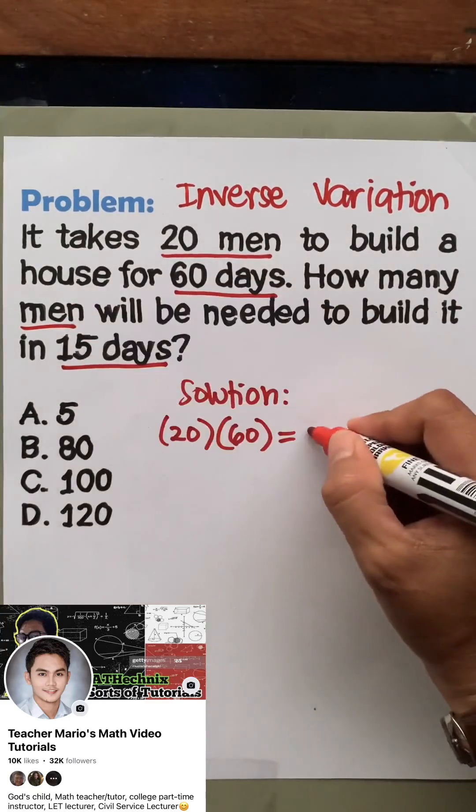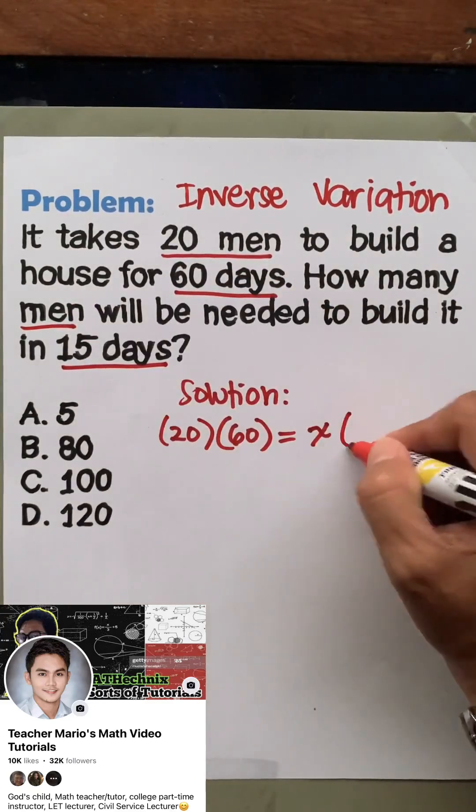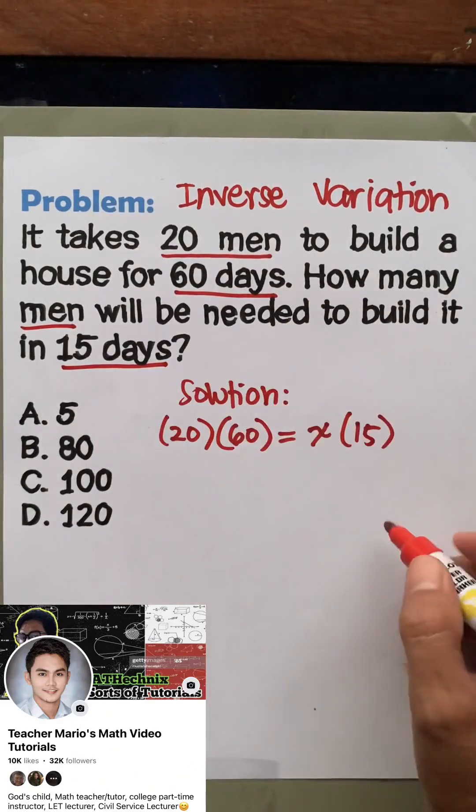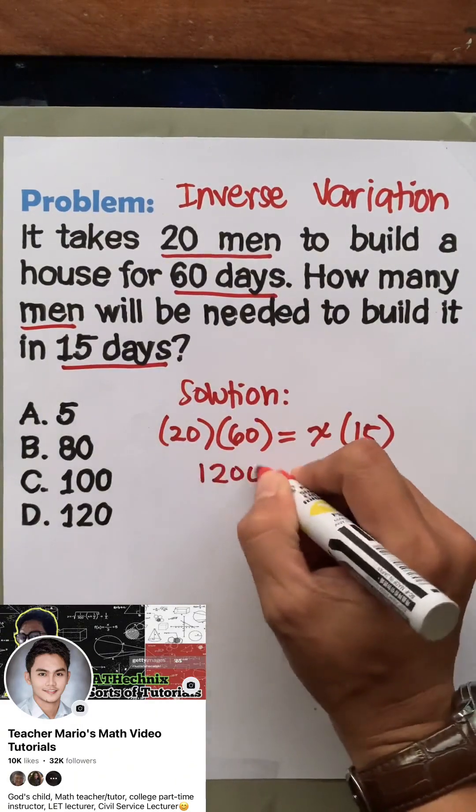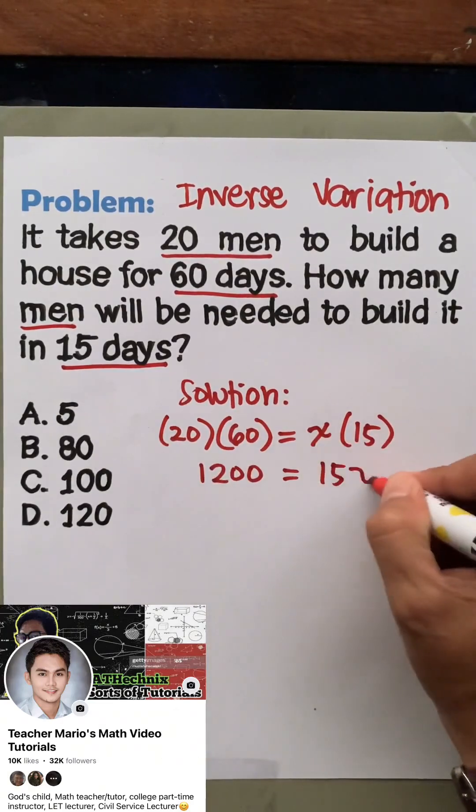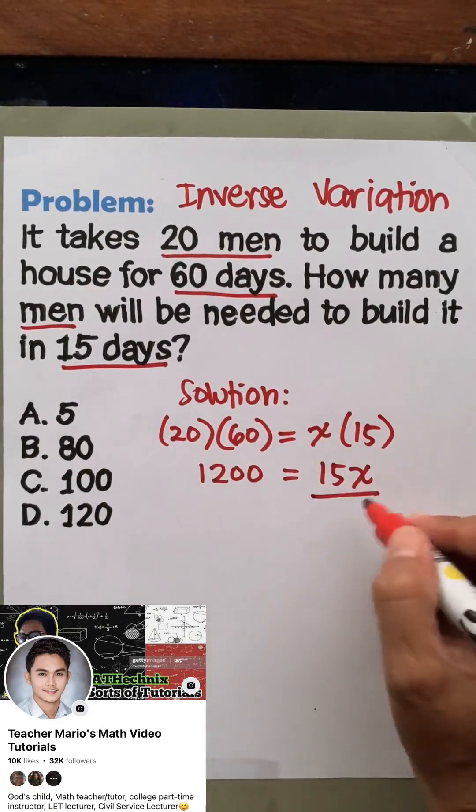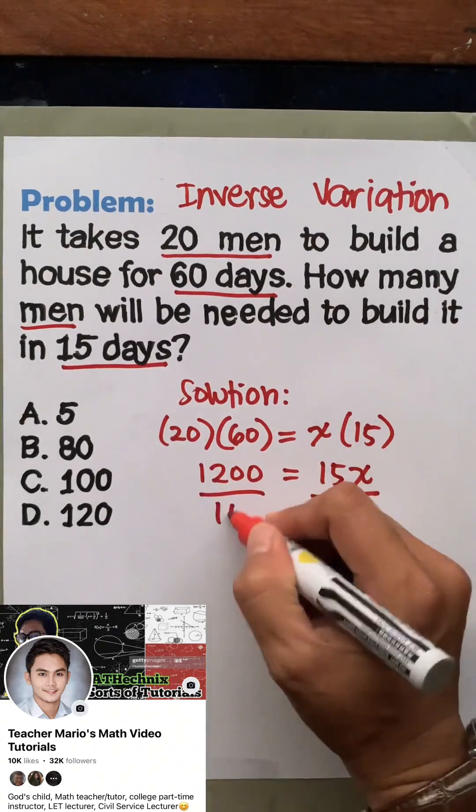Now to solve for x, eliminate 15 by dividing both sides by 15. So x is equal to 1200 divided by 15, which is 80. The answer is 80 men, letter B.